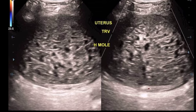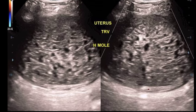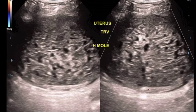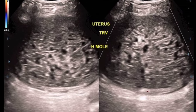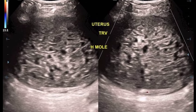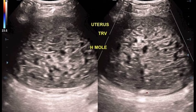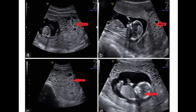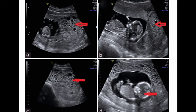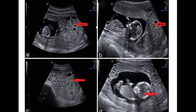As described previously, hydatidiform moles arise from gestational tissue. In complete hydatidiform mole, there is no fetal tissue present. In partial hydatidiform moles, there is some residual fetal tissue. Both are due to the overproliferation of chorionic villi.